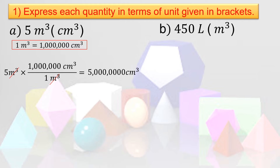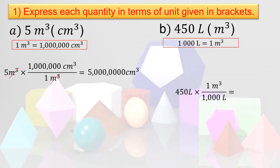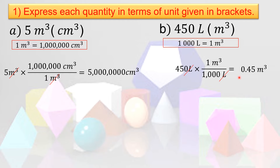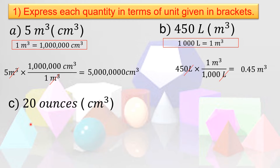Now let us convert 450 liters to cubic meters. We know that 1,000 liters equals 1 cubic meter. We multiply 450 liters times 1 cubic meter over 1,000 liters. Always write the given unit in the denominator so you can cancel. Dividing 450 by 1,000 gives 0.45 cubic meters.